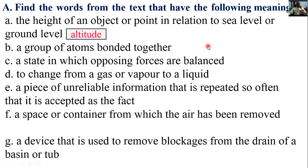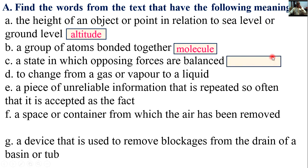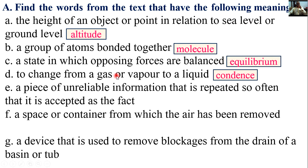A group of atoms bonded together — its meaning is molecules. A state in which opposing forces are balanced — its meaning is equilibrium. To change from gas or vapor to a liquid — that is condensed. A piece of unreliable information that is repeated so often that it is accepted as fact — that is factoid.